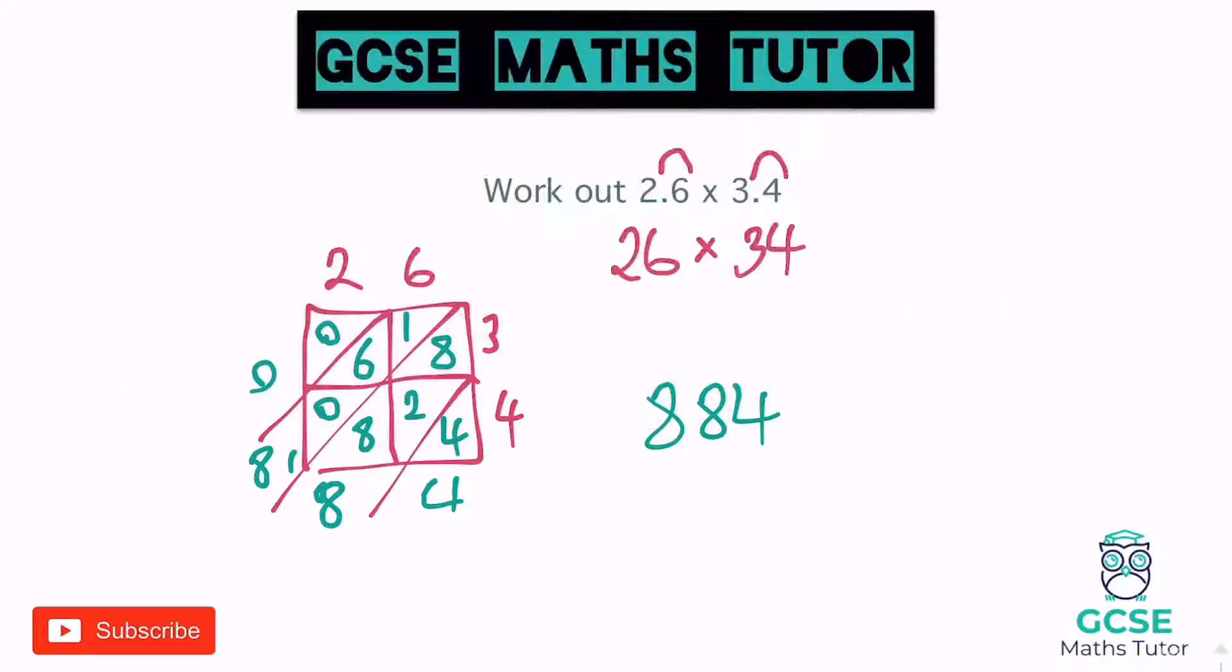Okay, so finishing this off, because it was 2.6 and 3.4. So up here, there was two place value hops that we've done there. We've hopped out twice. So I'm just going to hop back in twice, and we get 8.84. So then just rewriting that nice and neat. 8.84 is our final answer. A little good tip when you're practicing these is you can always check it on a calculator just to make sure that you've done it right. But that should always work for you there following that process. Let's have a look at another one.